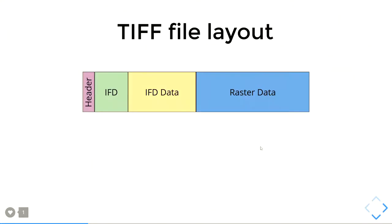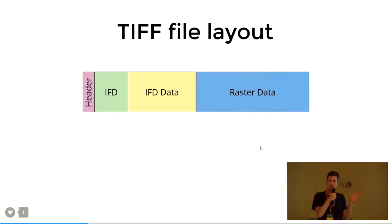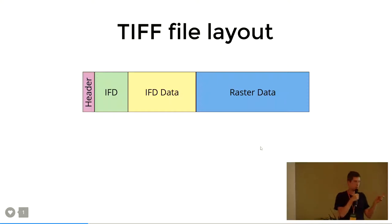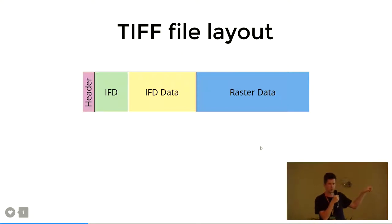This is what a well-behaved TIFF file looks like. First you have the header, then right after it you have the IFD, then right after that you have the IFD data — the values that don't fit into the tags — and then you have the raster data. But it does not need to look like that. Your TIFF file could be spread over the whole file and there can be holes inside. A well-behaved TIFF file looks like that.